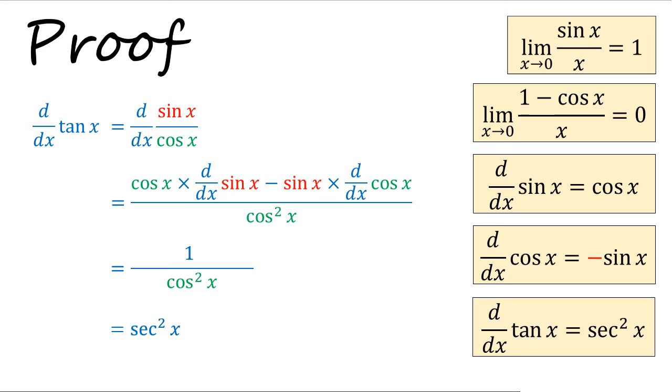With this, we have proven the derivative for sine x, cosine x, and tangent x to be cos x, negative sine x, and secant squared, respectively.